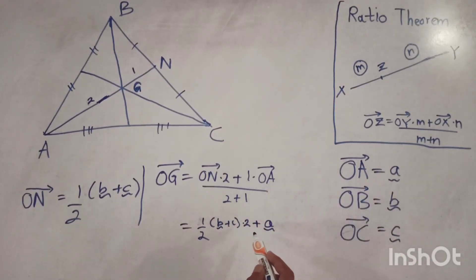Now we can divide this by 3. Then 2 is simplified. We finally have b plus c plus a divided by 3.